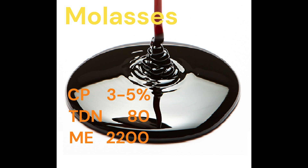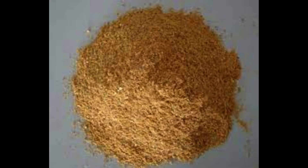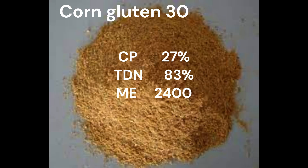Molasses contains 3-5% crude protein, 80% total digestible nutrients, and metabolizable energy of 2,200. Corn gluten 30% contains 27% crude protein, 83% total digestible nutrients, and metabolizable energy of 2,400.